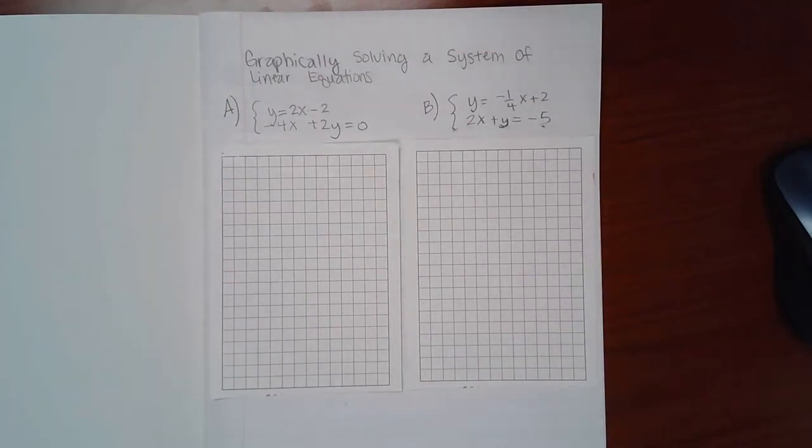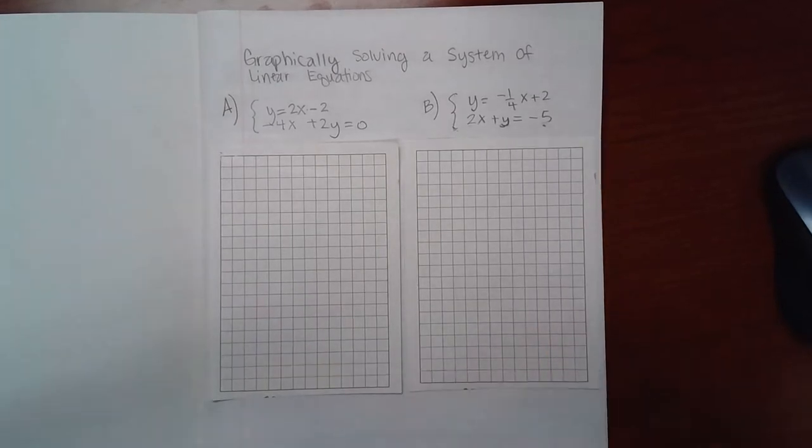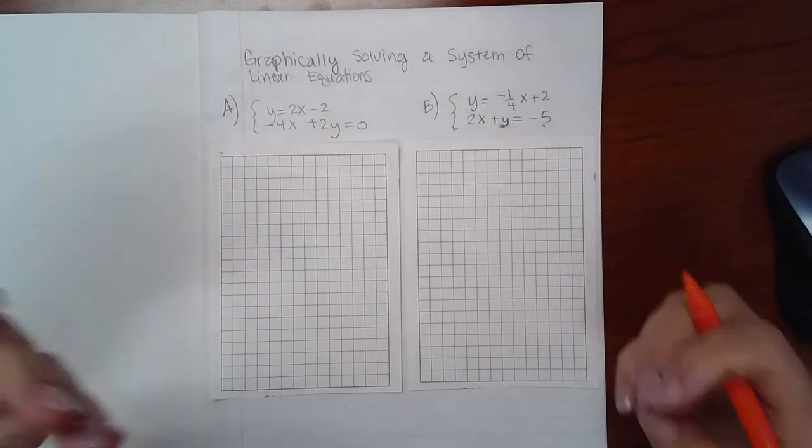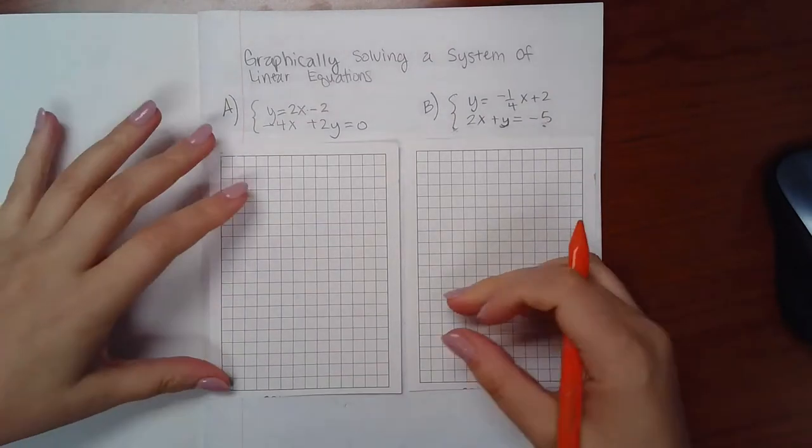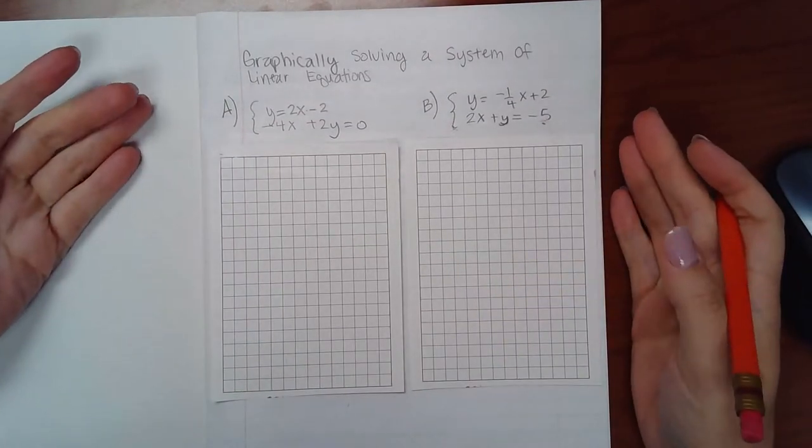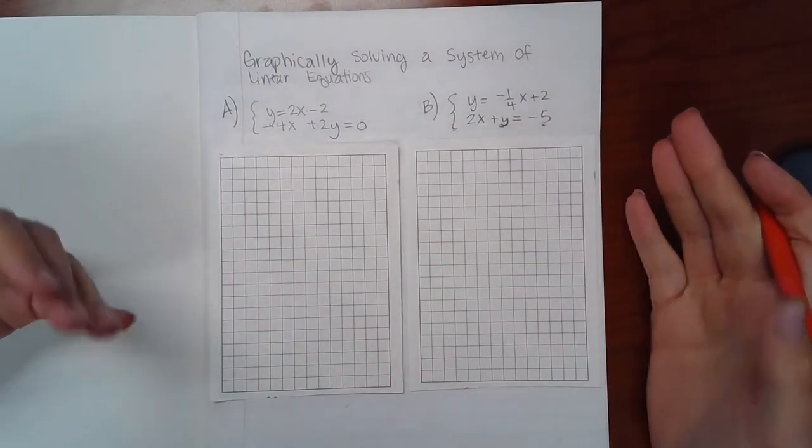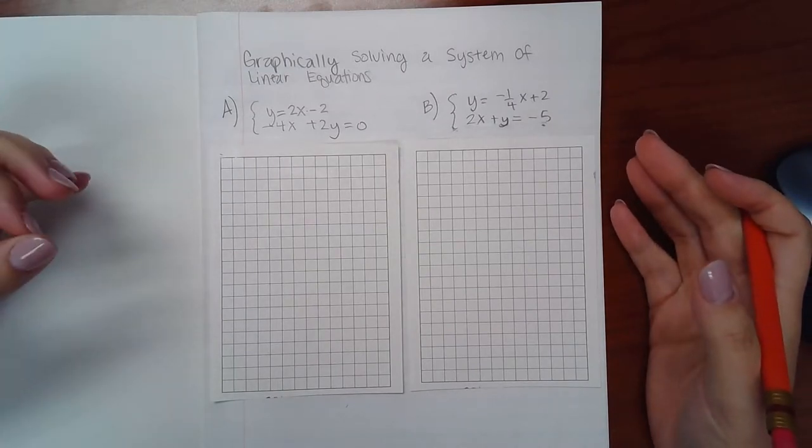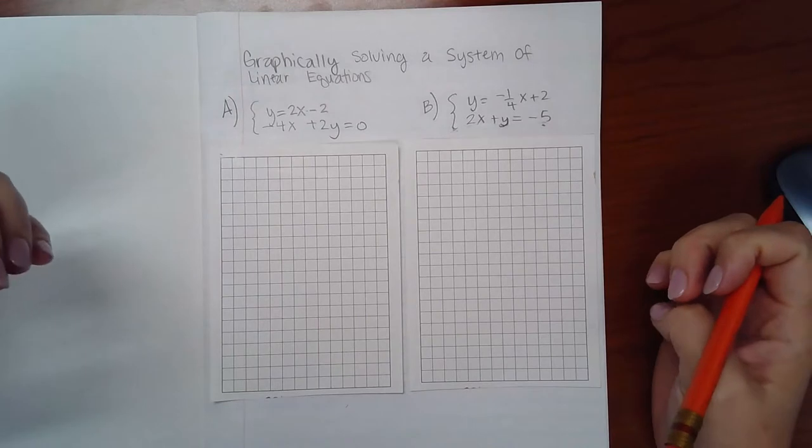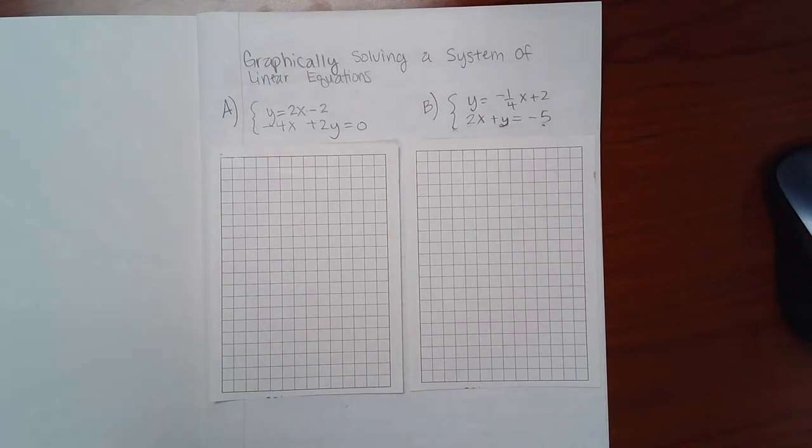This topic is from Chapter 4, Graphically Solving a System of Linear Equations. Essentially what we do is we draw each line and then we see where they intersect. If they don't intersect at all, then there's no solution. If they do intersect, the point where they intersect is the solution. And if it happens to be the same line, then there are an infinite number of solutions all along that line.